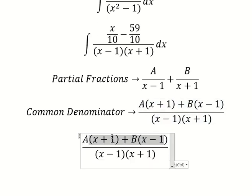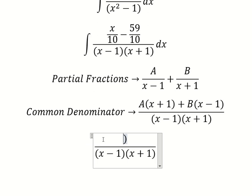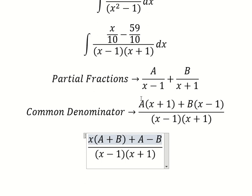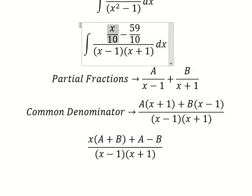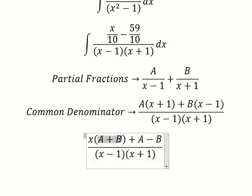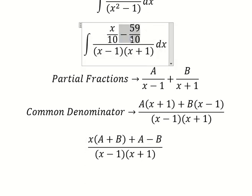So we need to arrange based on the terms of x. So we need to compare coefficients in here. This one we have x over number 10, that means A plus B equals one over number 10, and this one equals negative 59 over number 10.